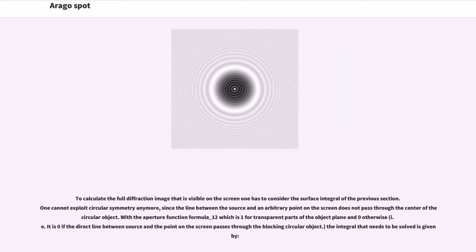To calculate the full diffraction image that is visible on the screen, one has to consider the surface integral of the previous section. One cannot exploit circular symmetry anymore, since the line between the source and an arbitrary point on the screen does not pass through the center of the circular object.